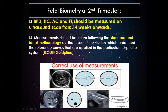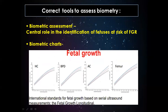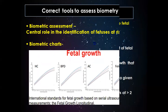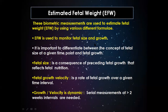From 14 weeks onwards, biparietal diameter, head circumference, abdominal circumference, and femoral length should be measured according to a standard and ideal methodology — the ISUOG guideline is preferred. There are separate growth charts for these individual measurements, and from these biometric measurements, estimated fetal weight is calculated using different formulae.